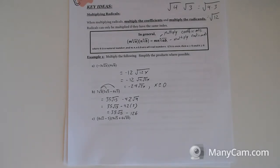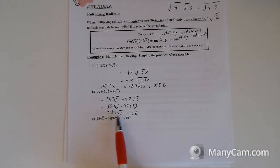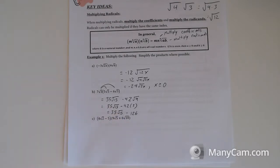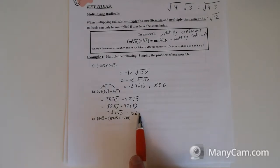Restrictions on this one: there's no variable, so there are no restrictions. Restrictions only apply when you have a variable. This is just a number — a real number, because you can take the square root of 15. If you leave it as root 15, you have an exact answer; if you take the decimal, you have an approximation. So this is an exact real number.